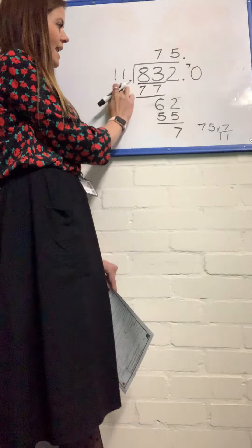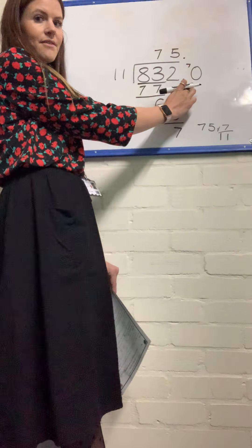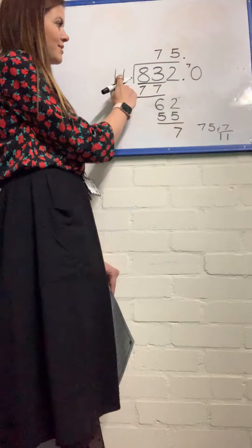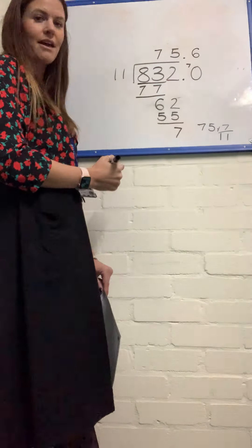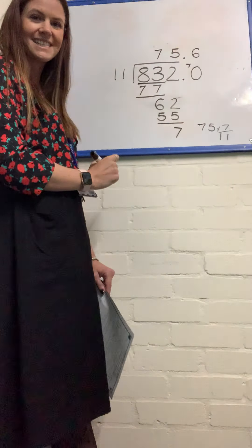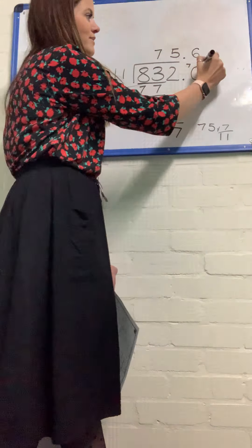How many equal groups of 11 tenths can I get from 70 tenths? How many 11s are in 70? Well, that's 6 because 11 times by 6 is 66, with 4 left over.